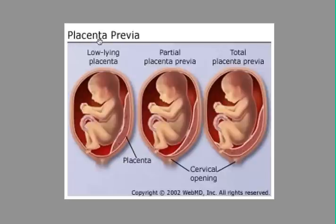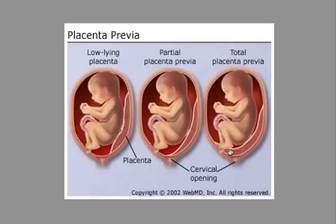Now let's talk about placenta previa. Sometimes the placenta creeps down and actually covers the birth canal, which is where the baby comes out. This is a problem because if the placenta is covering the birth canal, the baby cannot be delivered normally. In this example, there is actually a placenta previa and the baby is also breech — so there are two issues with this pregnancy.